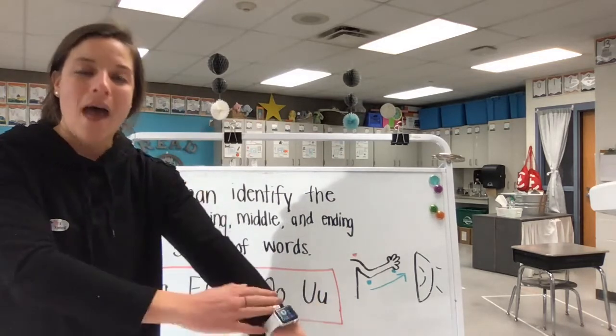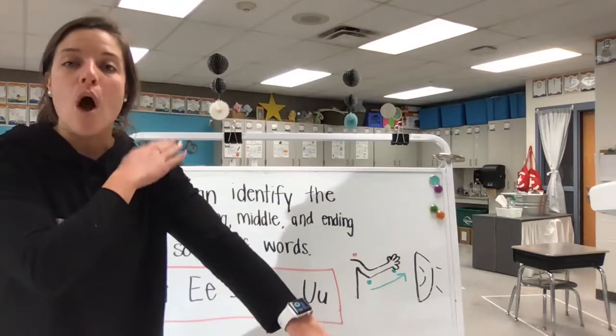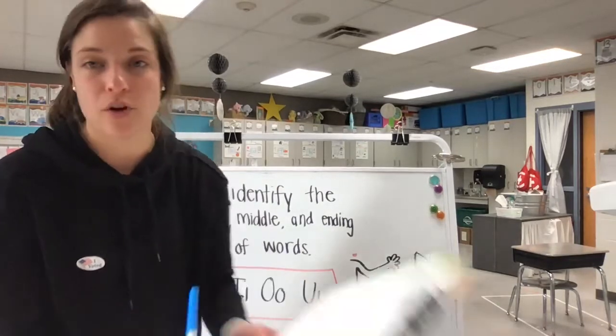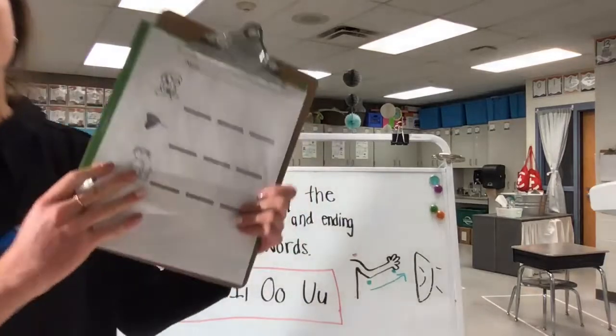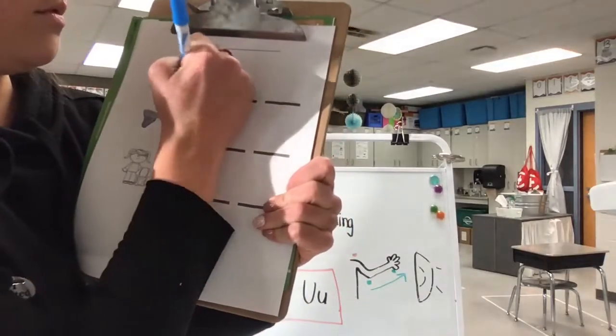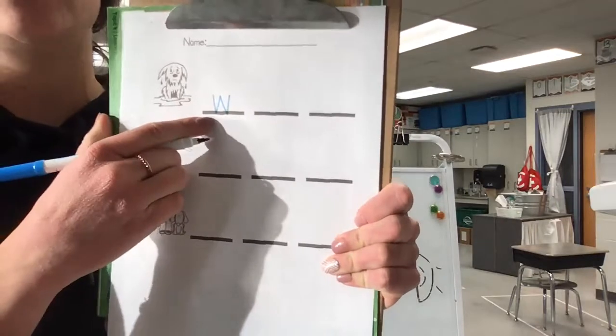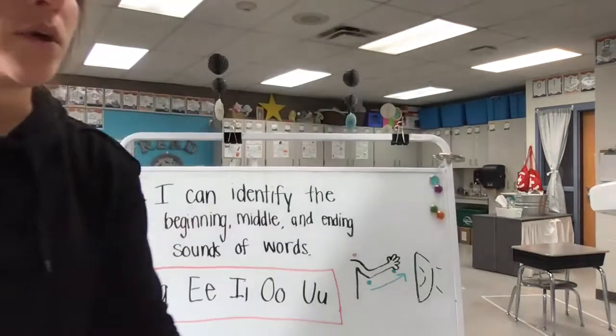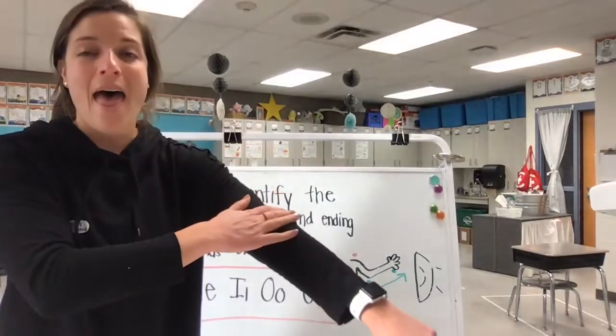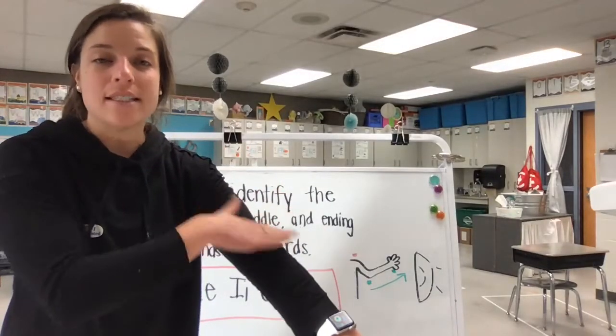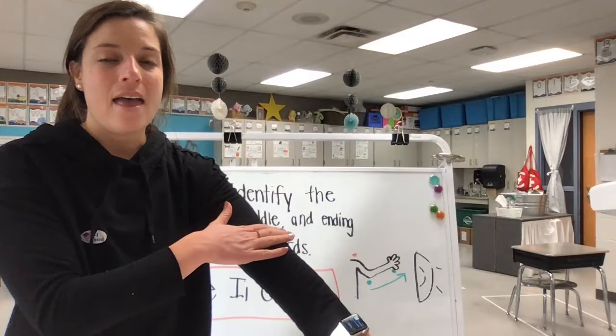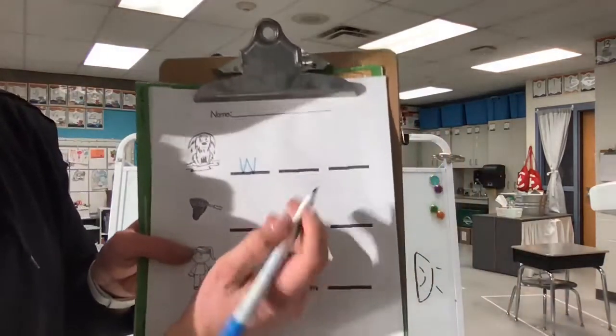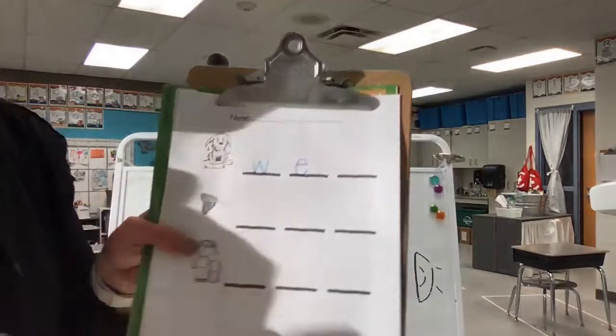So our word is wet. What letter says W, W? Our first sound. What letter makes our first sound? And that letter is W. We're going to write a lowercase W on that first line. Our beginning letter. And when we go down to our elbow. E, E. What vowel says E, E, E? E. So in our middle line we're going to write a lowercase E.